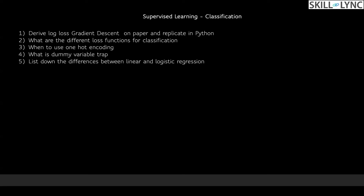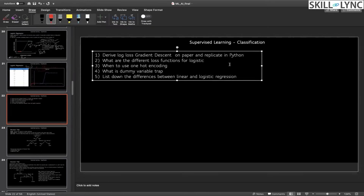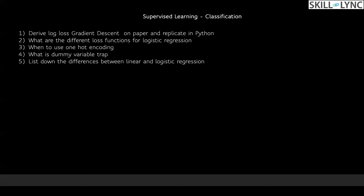What are the different loss functions used for classification? Classification is a problem; logistic regression is a machine learning model used for solving classification problems. There are different loss functions — we mentioned some, but we'll look at the log loss function in detail in the advanced session. Similar to mean square error used for linear regression, log loss is the function used most of the time in industry.